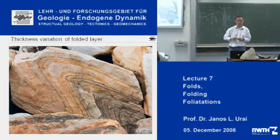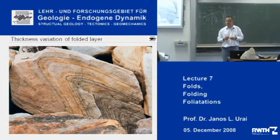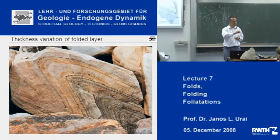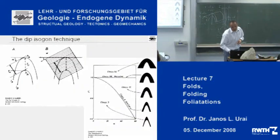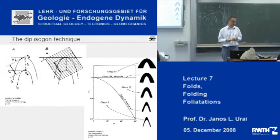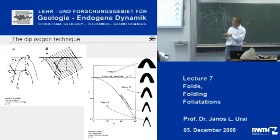There has been a little bit more to it. And in the textbook of Ramsey, there is a method to actually measure this change in thickness around a fold. It is called the method of the dip isogons. What you do is you make a drawing of the fold, and you draw the two sides of the layer.